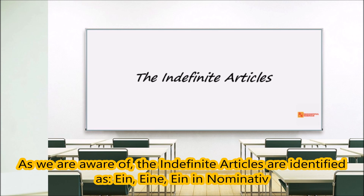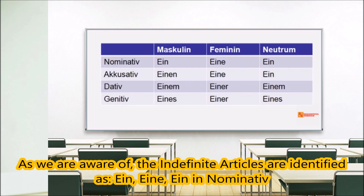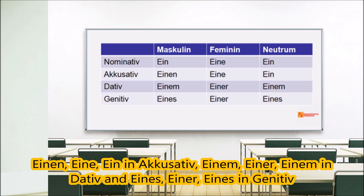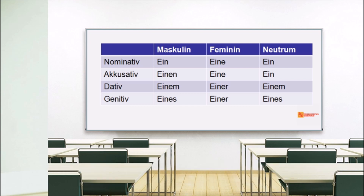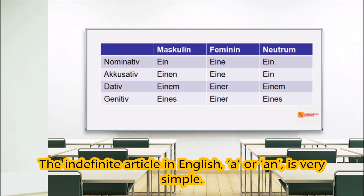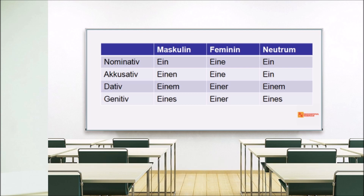As we are aware, the indefinite articles are identified as ein, eine, ein in nominative; einen, eine, ein in accusative; einem, einer, einem in dative; and eines, einer, eines in genitive.